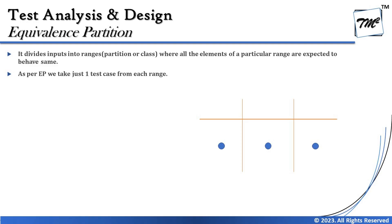All we do is divide inputs into equivalence partitions — that's what the name of the technique is. The partitions are also called ranges or classes, so please be aware of that as the examination may use these words too. We then take just one test from each partition. Creating the correct partitions is the most important thing; the question will provide information to help you identify valid and invalid partitions.